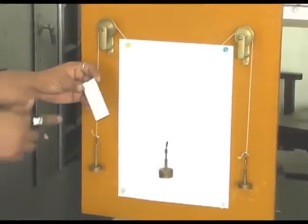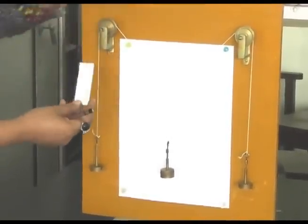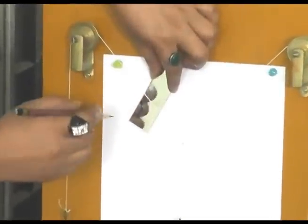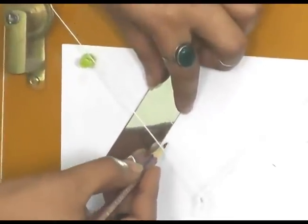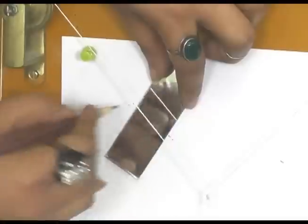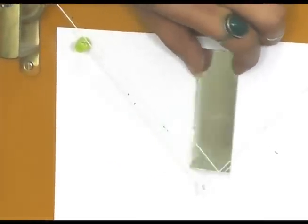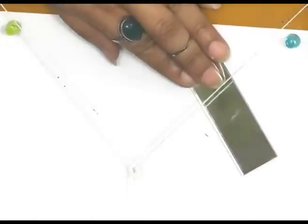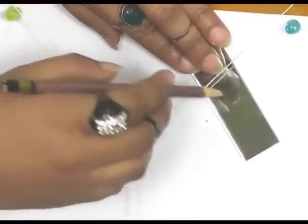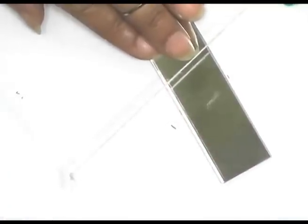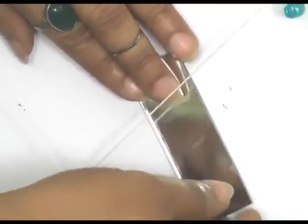Now with the help of mirror strip we will find out the point where thread and its image coincide with each other, and at that point we will mark with pencil. This is for P force. Similarly, we will perform with Q force where thread and its image coincide with each other. We will mark that position for Q force and revise the procedure for unknown force.